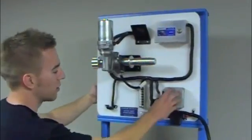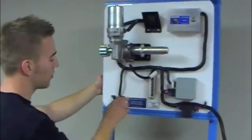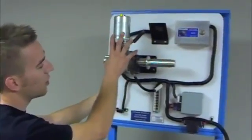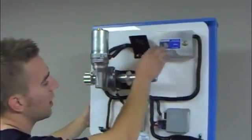On the trainer we have the control module, pin outs for the control module, data link connector, the power steering unit itself, an ammeter and a fault box.